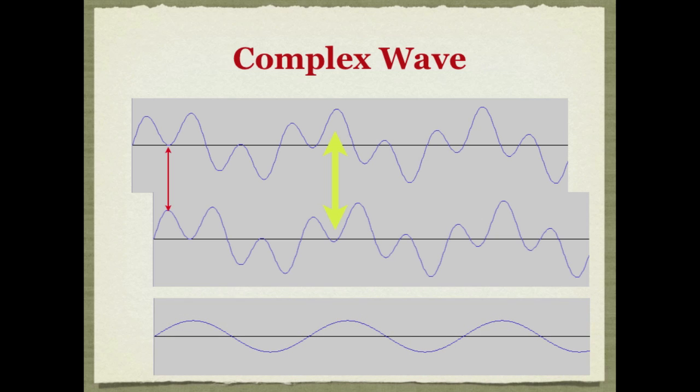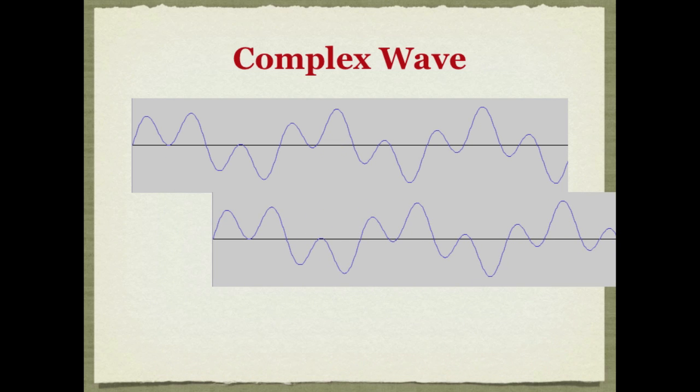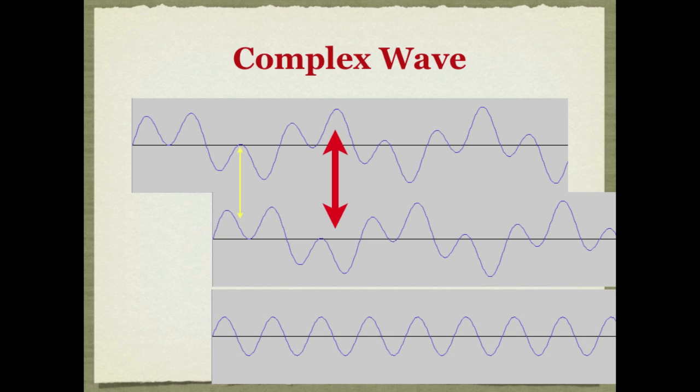Now if we shift the time delay even more, we can find a spot where the large waves are out of phase, 180 degrees. But the small waves are now back mostly in phase, say about 90 degrees, and we end up with canceling out the large wave, the low frequency, and leaving the small high frequency wave in.